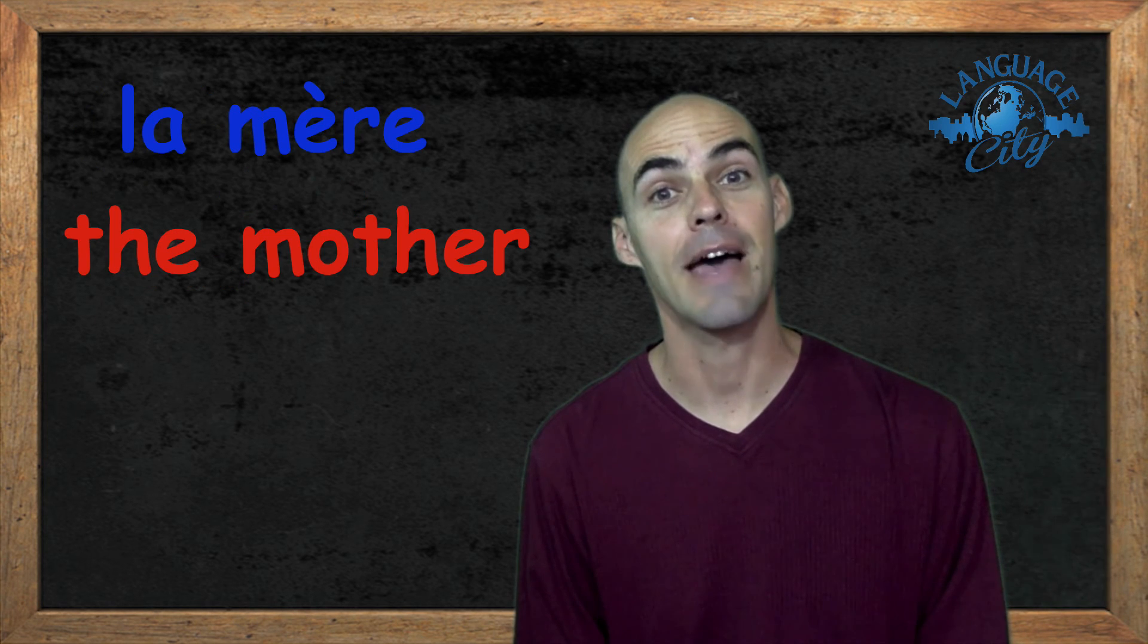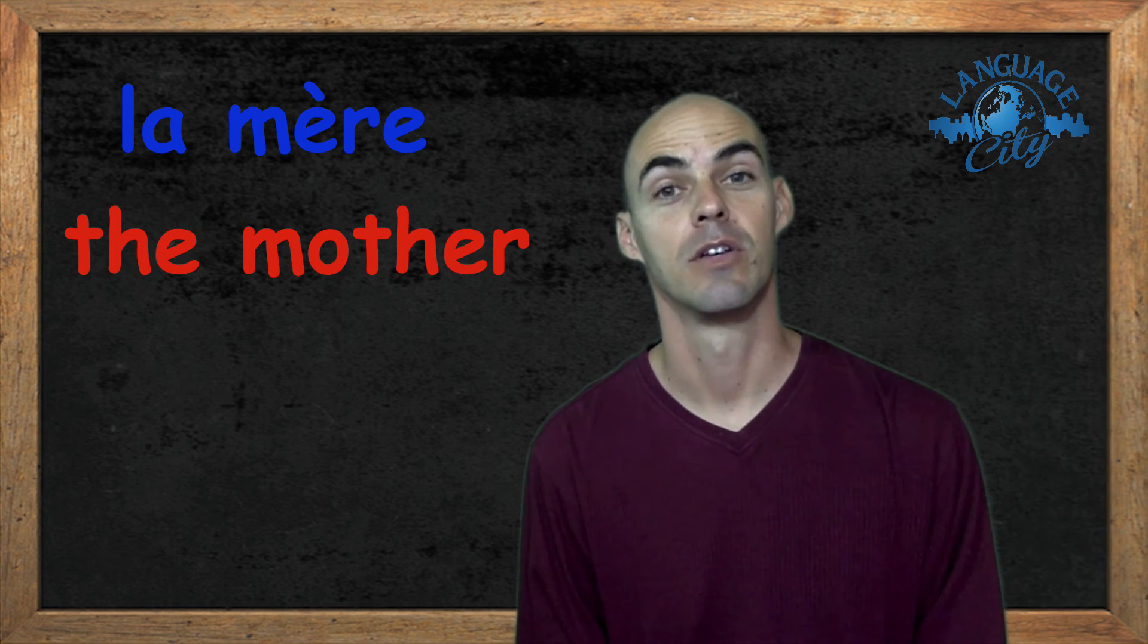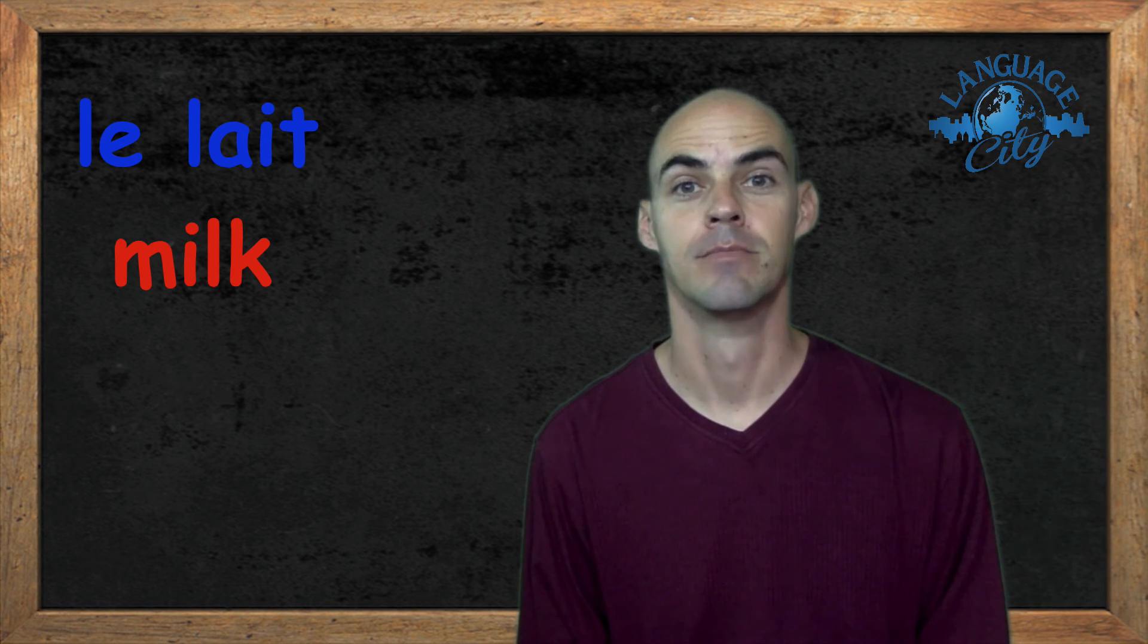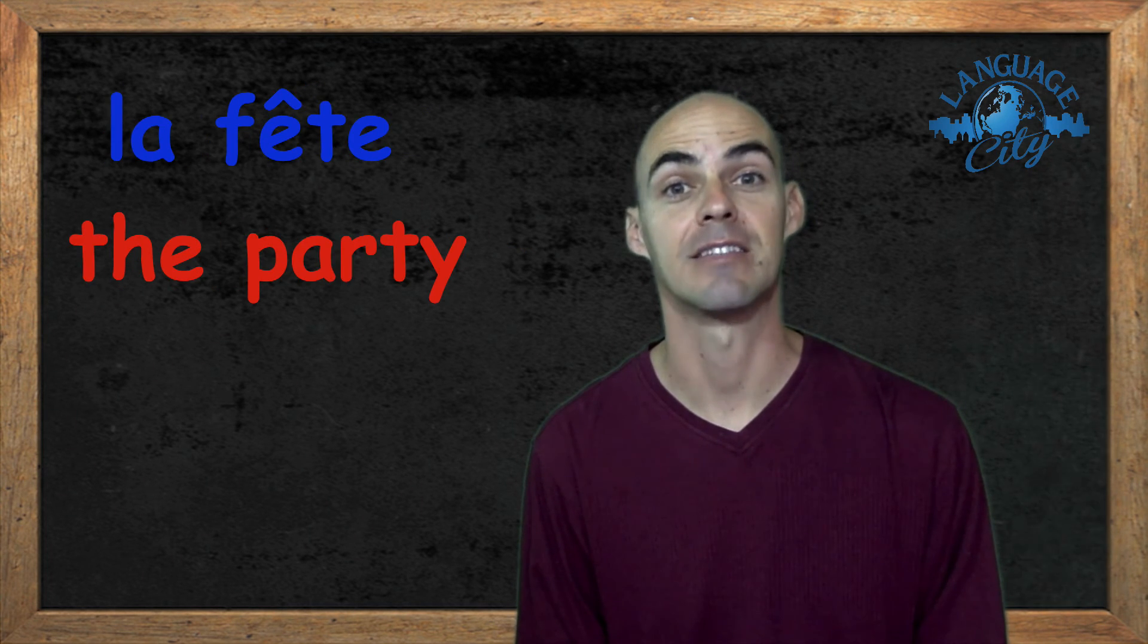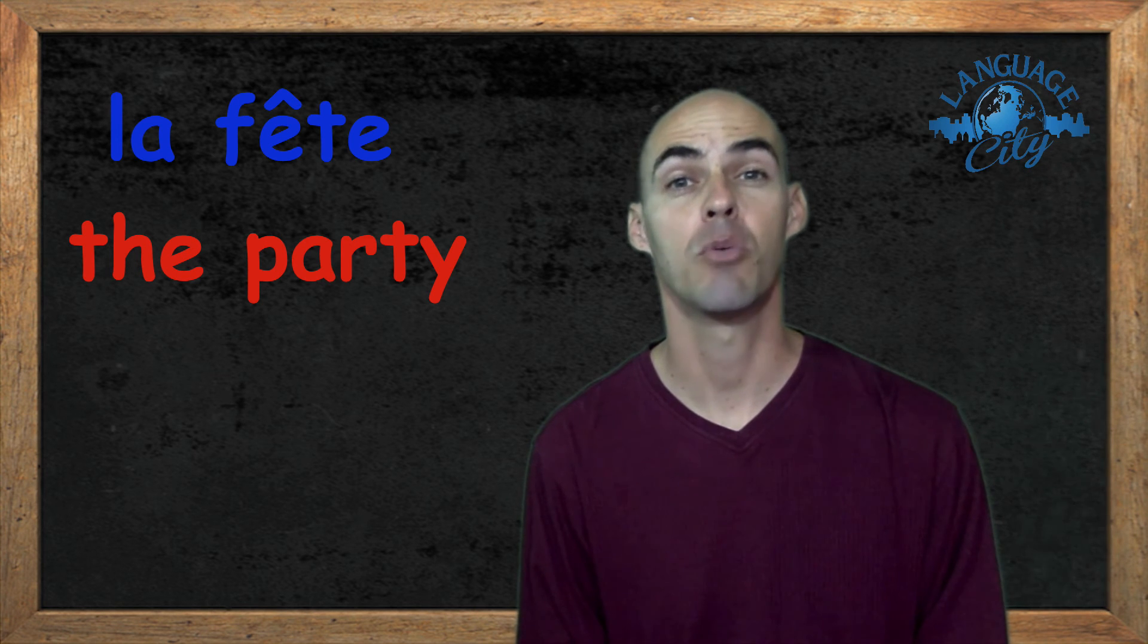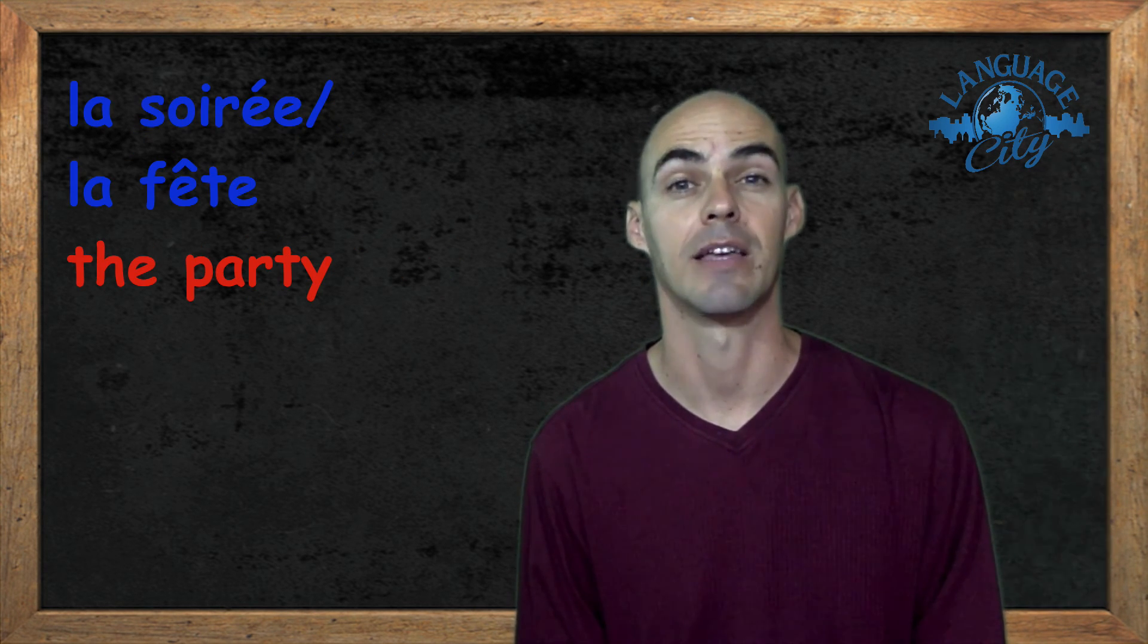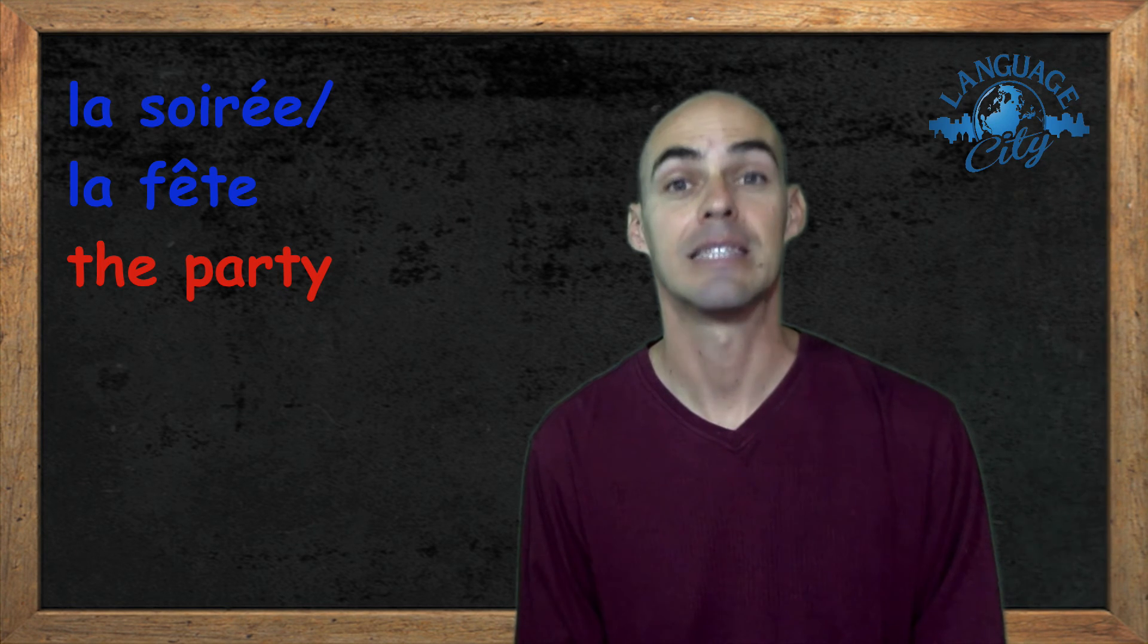Number twenty-one was la mère, the mother. Twenty-two was le lait, milk. Number twenty-three was la fête, the party, even though most people would rather use the word la soirée for a party. La soirée, same as the word evening.